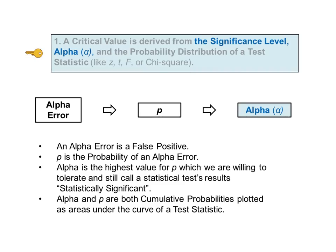Let's first address the concept of alpha, the significance level. In order to understand alpha, we need to first understand the concepts of alpha error and p, the p-value. Alpha error is also known as type 1 error or false positive. It is the error of concluding that there is a statistically significant difference, change, or effect, when in reality there is not. So it is the error of rejecting the null hypothesis when the null hypothesis is true.